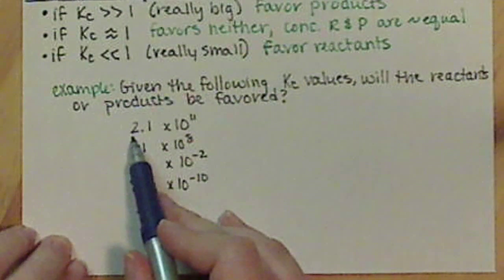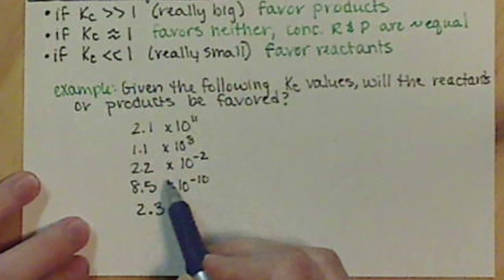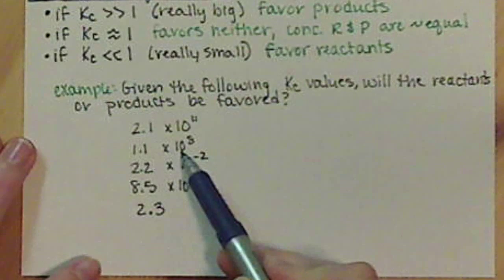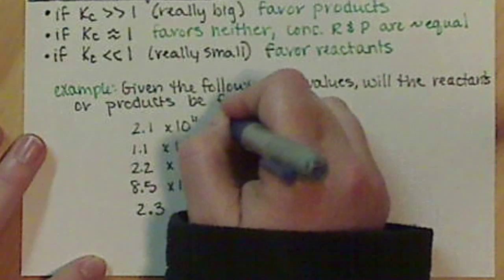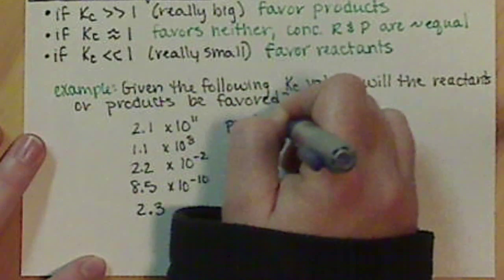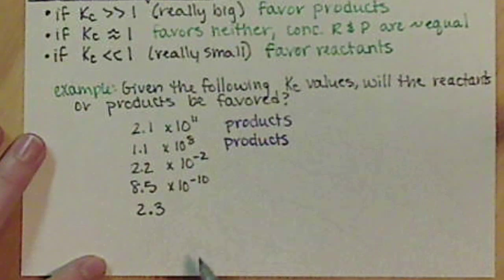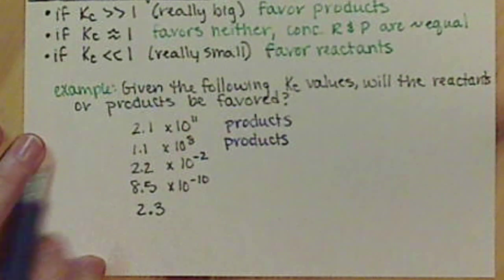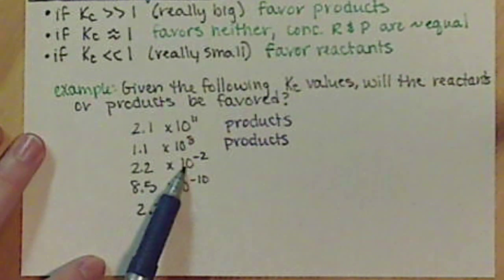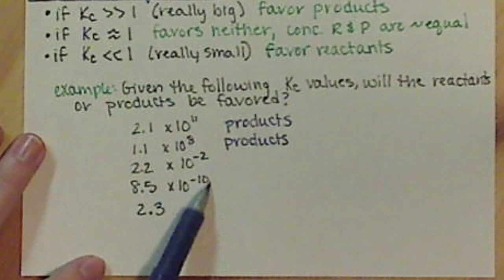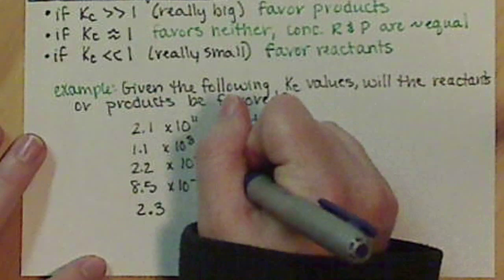So our first value here, we have 2.1 times 10 to the 11. Times 10 to the 11 is a very large number, as well as our second number here, times 10 to the 8 is very large. So both of these numbers are going to favor the products. So both of these reactions, if we have Kc values of this, we're going to favor the products. For these other two numbers, we have negative exponents, so they're very, very small, which means they're going to favor our reactants.